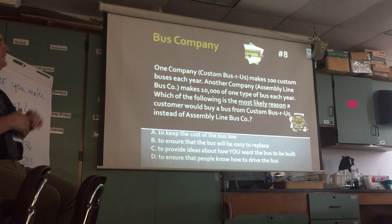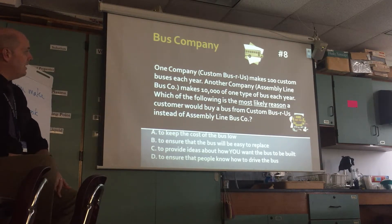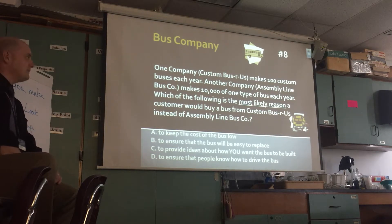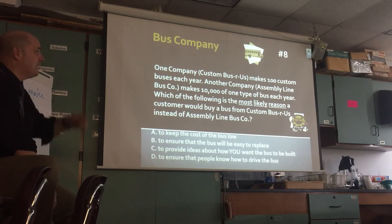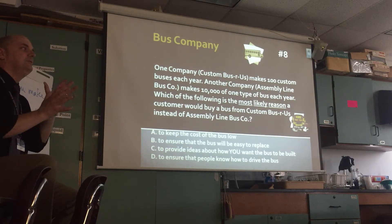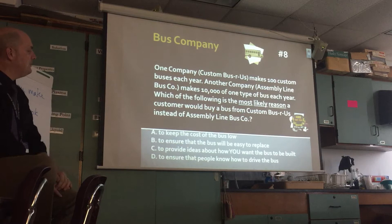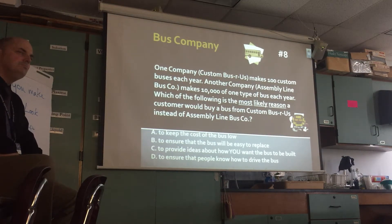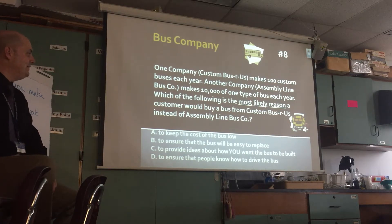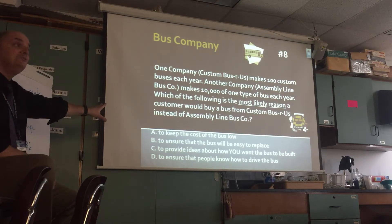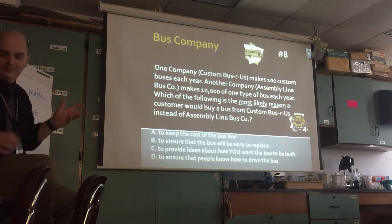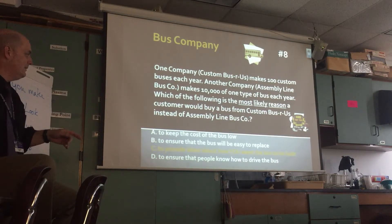You get really good at your job if you do the same thing over and over — that's mass production. Custom Bus R Us makes 100 custom buses a year; Assembly Line Bus Company makes 10,000 of the same bus. Which is the most likely reason a customer would buy from Custom Bus R Us instead? The answer is C: to provide ideas about how you want the bus built. Custom makes it your way.